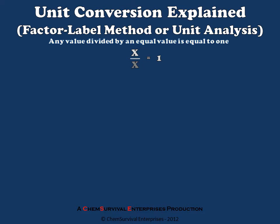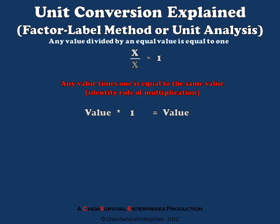Now I'm going to remind you of a very simple property of mathematics, and that is the identity property of multiplication, which tells us that any value times one is equal to itself. And since we've already determined that placing equal values one over the other results in a ratio equal to one, we can substitute this ratio and still retain the identity rule. So any value times a ratio of equal values is still equal to itself.